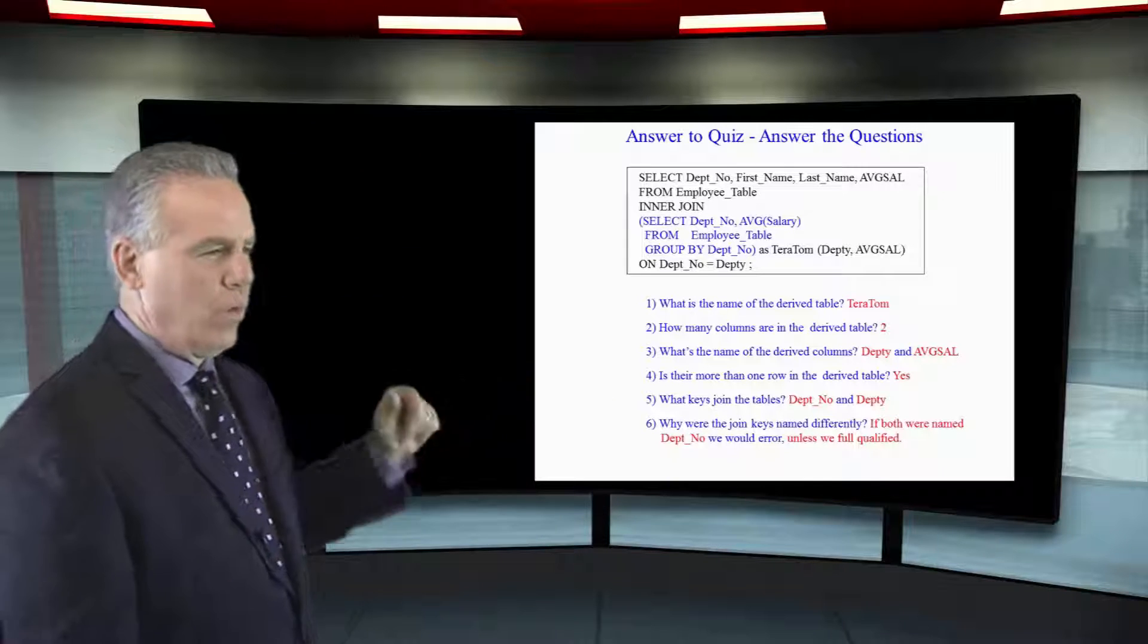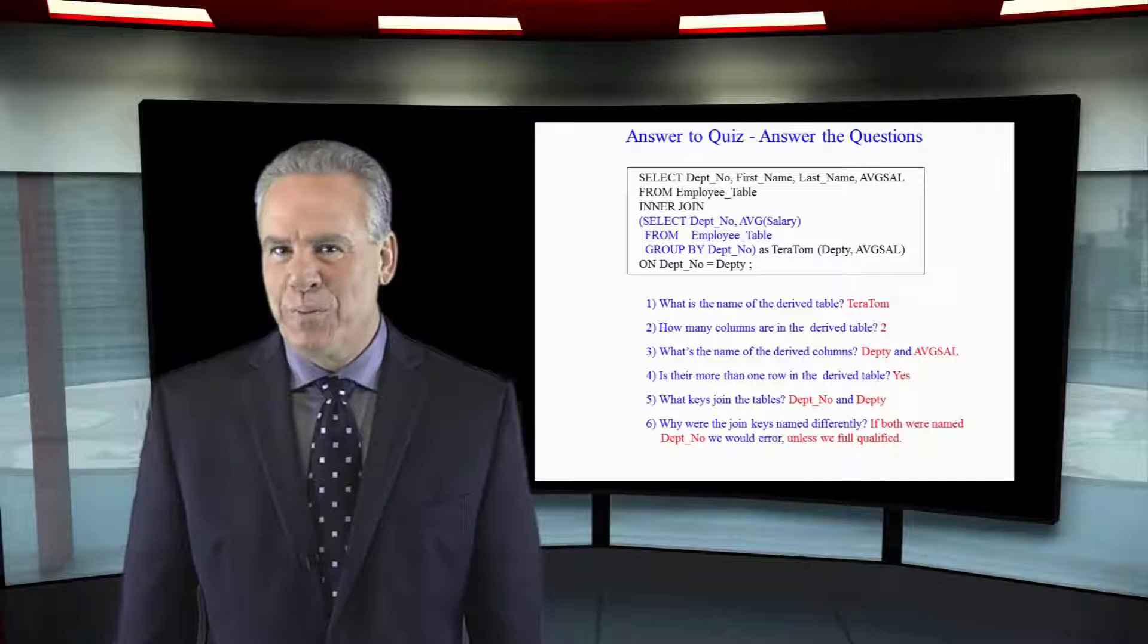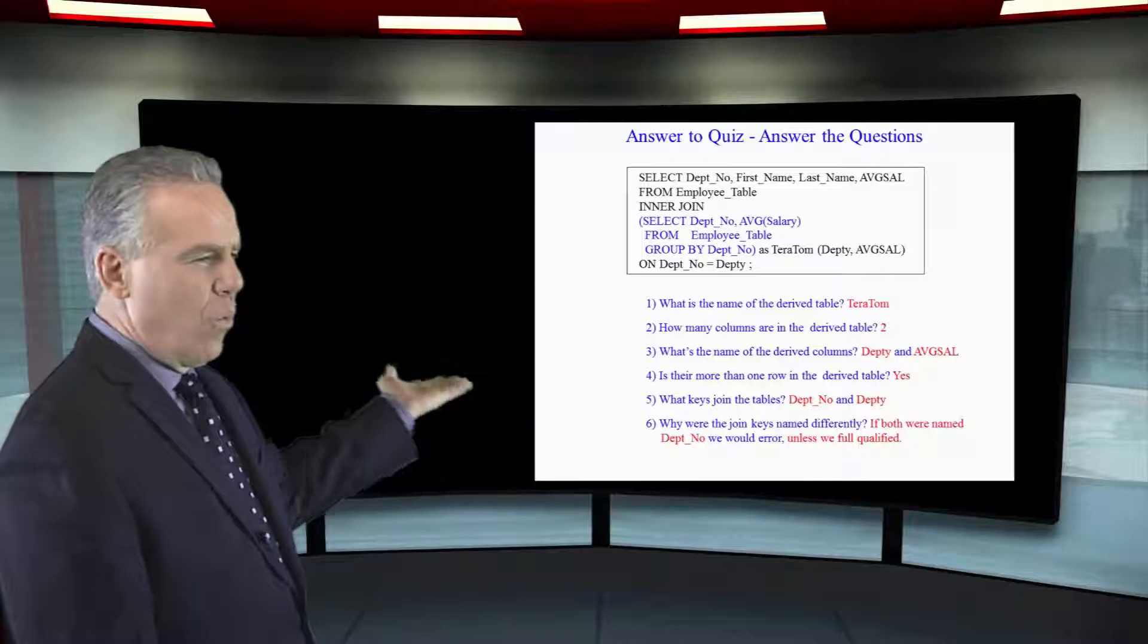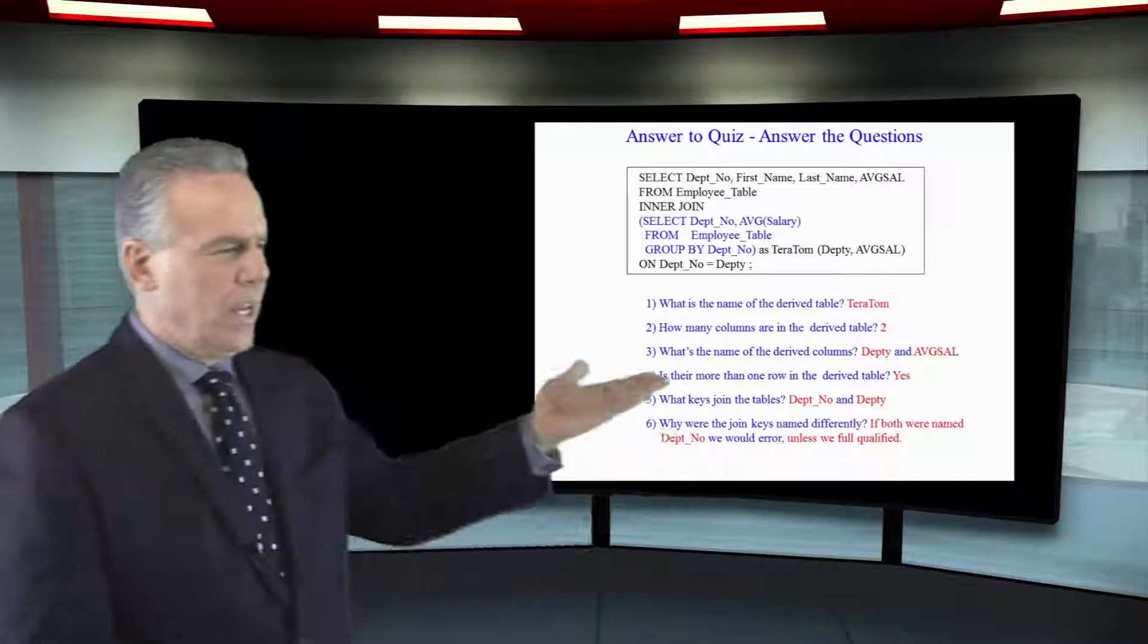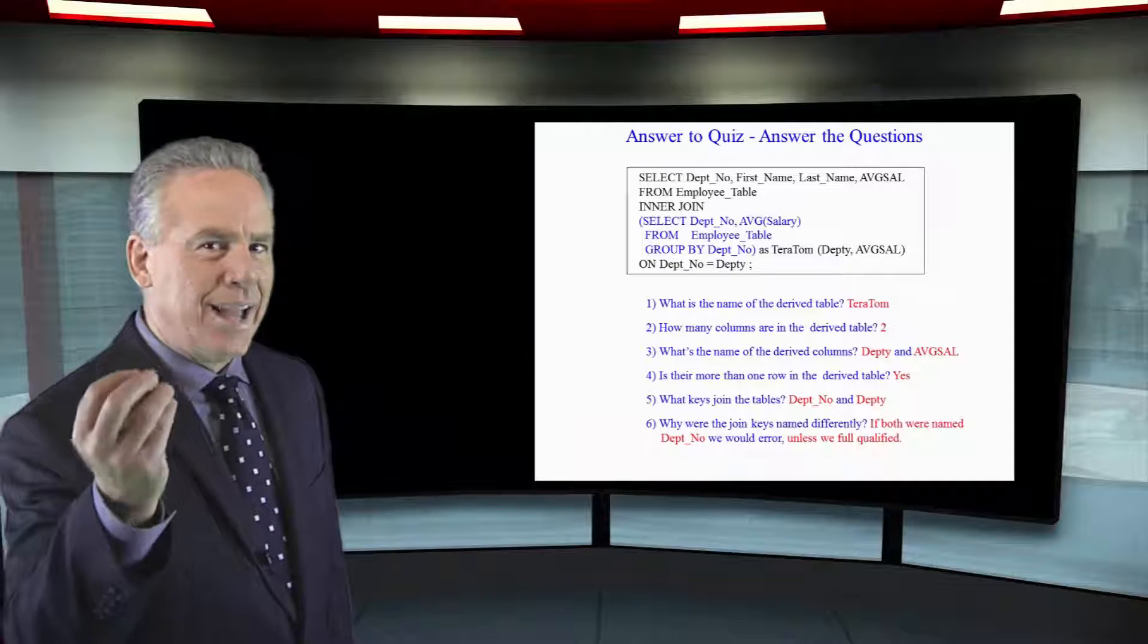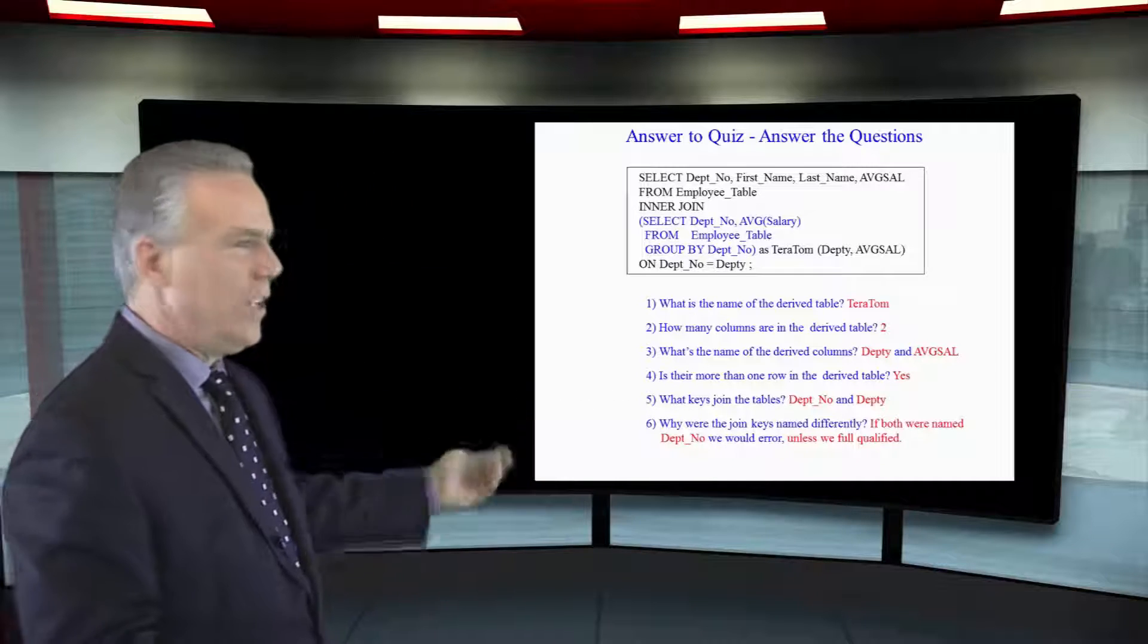Is there more than one row in the derived table? Yes, because we're grouping by department number. What keys join the tables together? Well, Depno and Deptee.